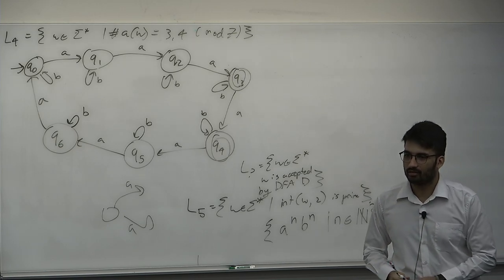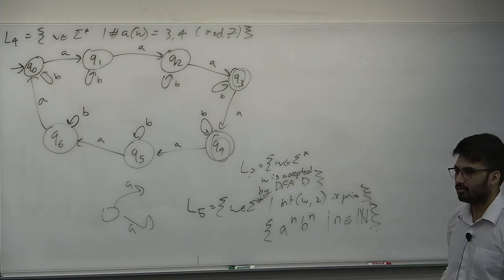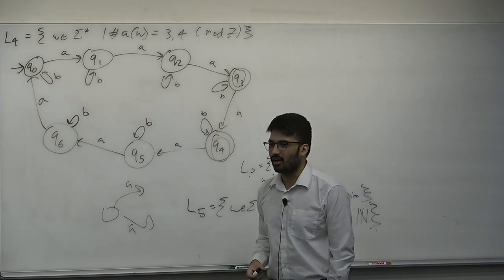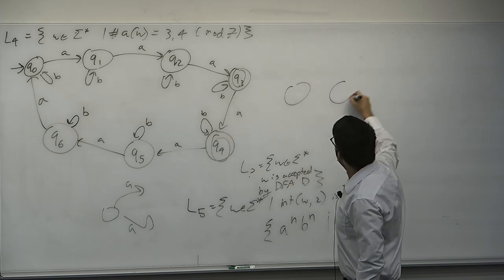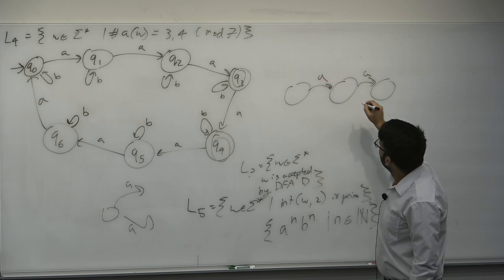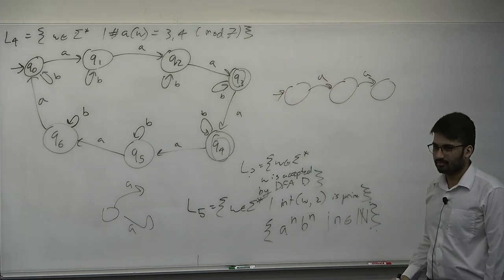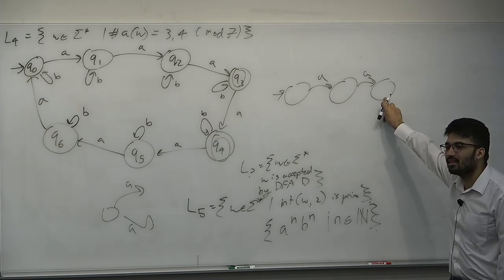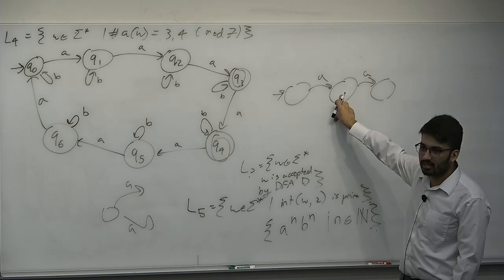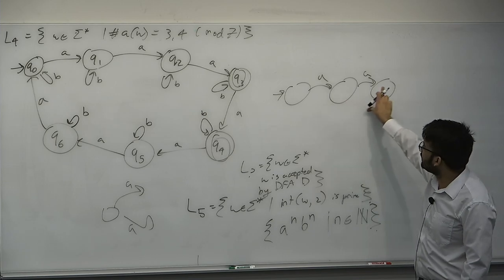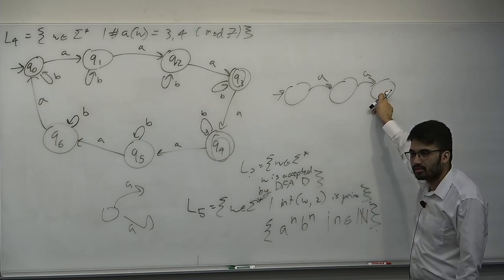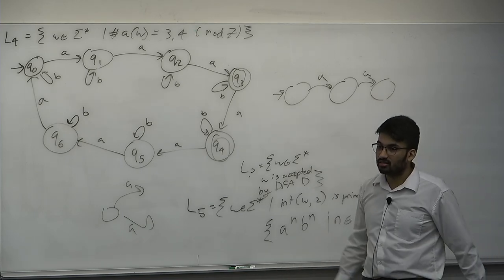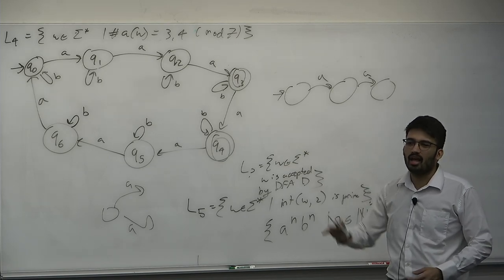A student asks: so anything that requires too much previous knowledge of the string can't be modeled by a DFA? It depends on exactly how much previous knowledge. For Aⁿ Bⁿ, if you made infinitely many states you could model it, but you don't have infinite states. You can think of being at a state as storing a bounded count. Two A's seen: finitely representable. But you can't determine you've seen arbitrarily many A's in a way that lets you check for the exact number of B's at the end.